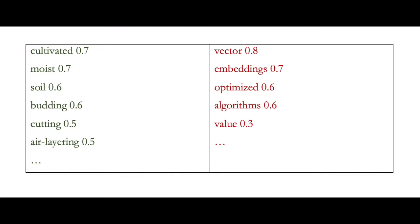Don't be surprised when you use a topic modeling package that implements LDA or a similar algorithm. As a result, it will give you topics as groups of words that express their respective topic. In our example, it could give two groups of words — one consisting of words like 'cultivated', 'moist', 'soil', 'budding', 'cutting', 'air layering', and another consisting of words like 'vector', 'embeddings', 'optimized algorithms'. Every word has a probability value of belonging to a given group or topic. The basic idea is that text documents consist of topics, and topics consist of words.